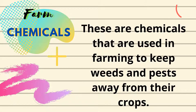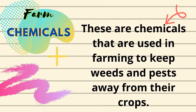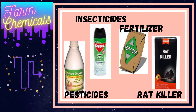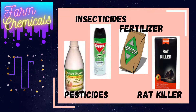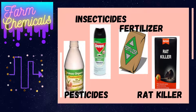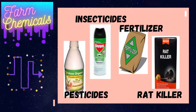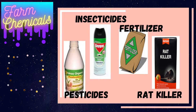First, Farm Chemicals. These are chemicals that are used in farming to keep weeds and pests away from their crops. Examples of farm chemicals are Pesticides, Insecticides, Fertilizer, and Rat Killer.